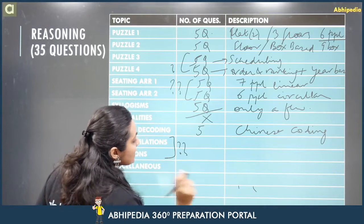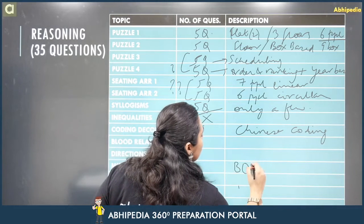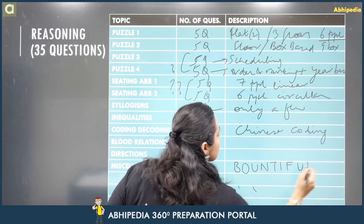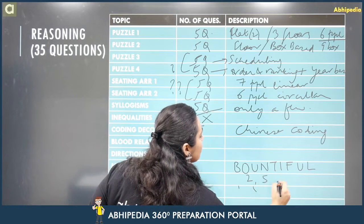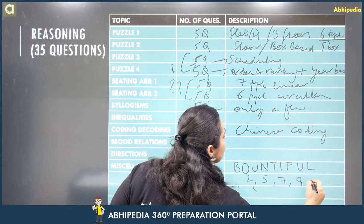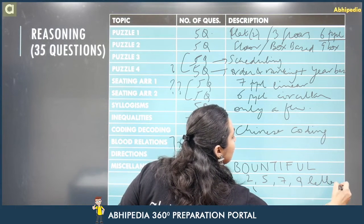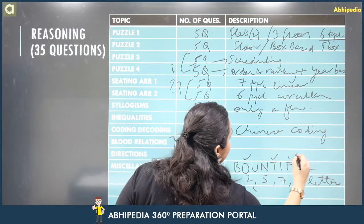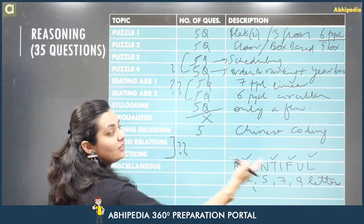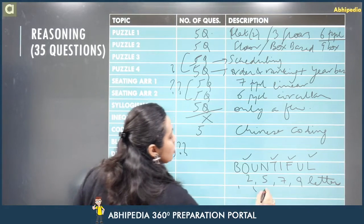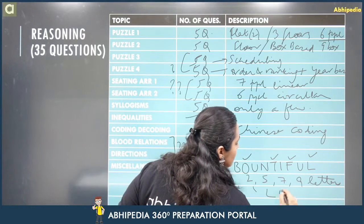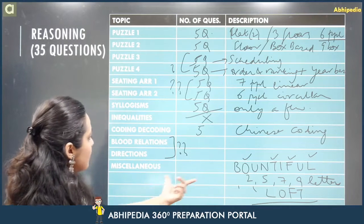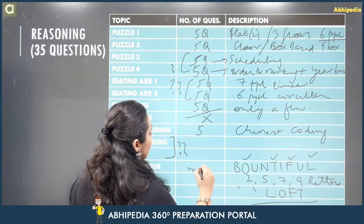In miscellaneous, one question that was identified involved the word 'BOUNTIFUL' — from this word, the second, fifth, seventh, and ninth letters were to be used to form a meaningful word. Those letters are O, T, F, and L respectively, and 'LOFT' was one meaningful word that could be formed.